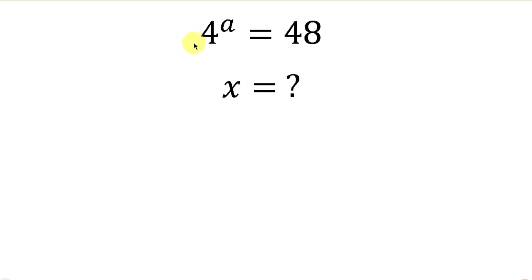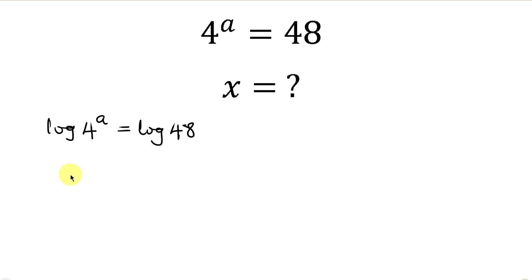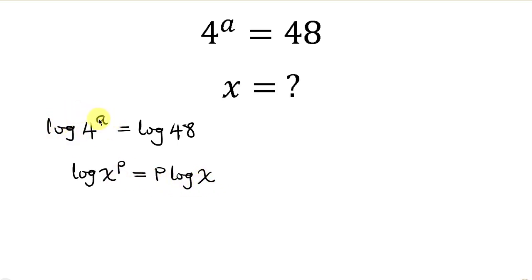Our first step will be to take the log of both sides. So I'll take the log of 4 to the a, equal to the log of 48. Now our next step will be to apply the law of logarithm that says when I have the log of x to the p, this is written as p log x. So applying this here, the log becomes a log 4, and this is equal to log 48.